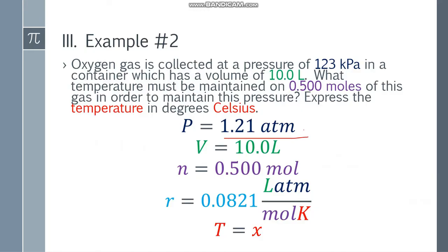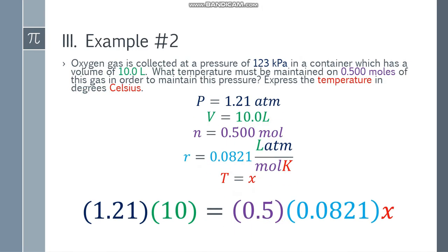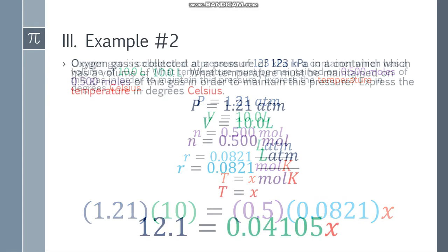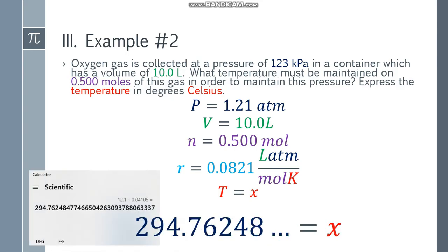Ngayon, dahil okay na tayo ATM liters, kasi di natin alam yung temperature. Gamitin natin yung formula. PV is equal to nRT. Substitute the values. We have 1.21 times 10. Color-coded naman siya, guys. This one is 0.5 times 0.0821 at ng x. Simplify both sides. It will become 12.1 is equal to 0.04105x. Divide both sides by 0.04105. Para makuha yung value ng x. And that will be 294.762484 and so on.